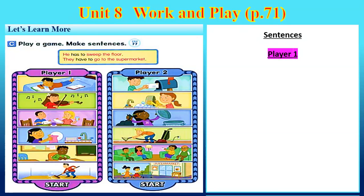Welcome to Unit 8, Work and Play. You can open your student book to page 71, and we continue on Let's Learn More. Look at Section C, Play a Game, Make Sentences. In here, you have a play rule for Player 1 and Player 2, and all the activities in the picture will be various.